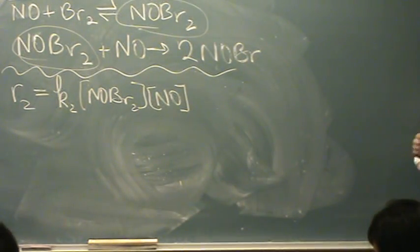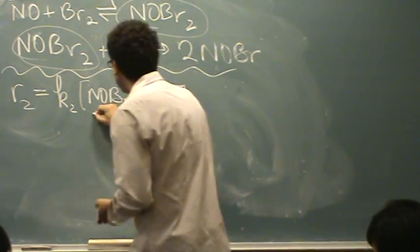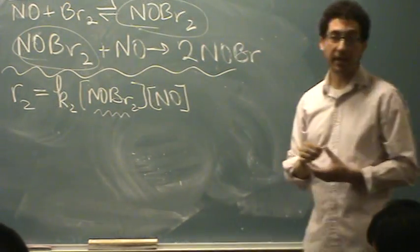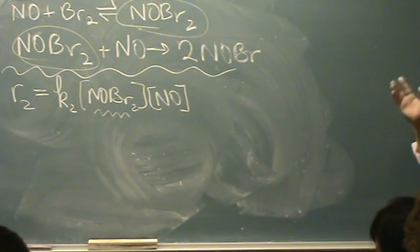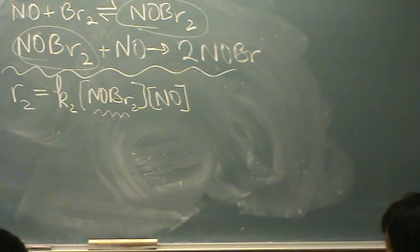So I have an intermediate in my answer right here. Not okay. So if that wasn't there, I'd be done. But whenever the rate that you're solving for is not the first one, not the first reaction, it's going to happen that you'll have an intermediate.